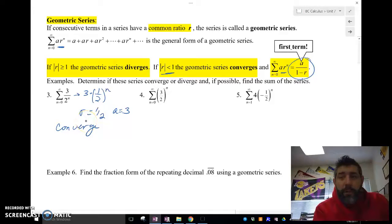What is it going to converge to? Well, that's going to be a over 1 minus r. So a is 3. 1 minus 1 half is 3 over 1 half, which is going to converge to 6.